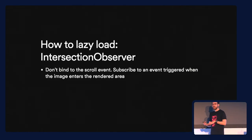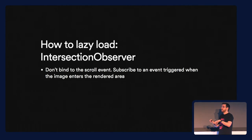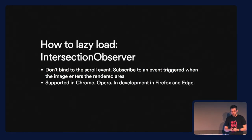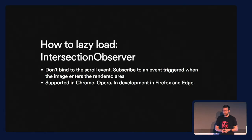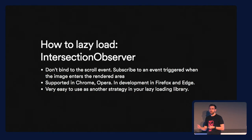There's the Intersection Observer API that I'm really excited about — it's very recent and can help solve this problem. Instead of binding to scroll or resize events, you subscribe to an event that fires when the image enters the viewport. You can also say: if this image is 100 pixels close to the viewport, request it. It's supported on Chrome and Opera, and is under development in Firefox and Edge. You can always provide a polyfill or fall back to the old lazy load approach.